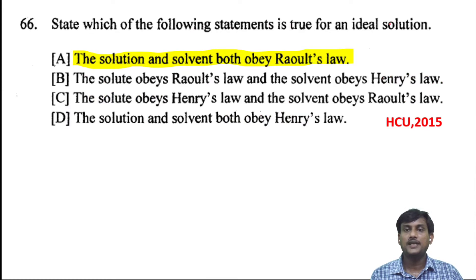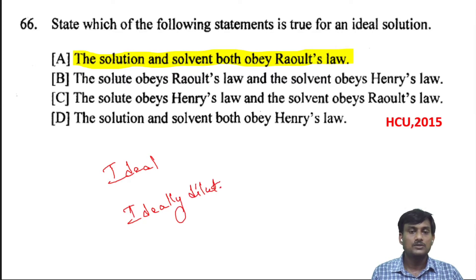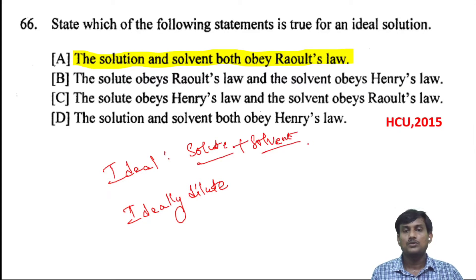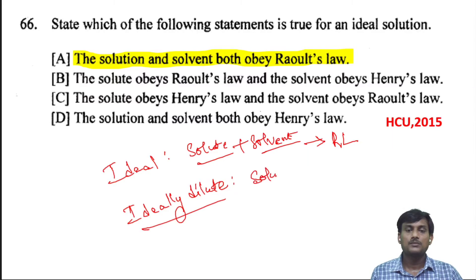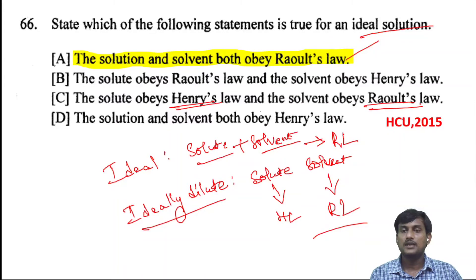Which of the following statements is true for an ideal solution? For an ideal solution, both solute and solvent obey Raoult's law. In an ideally dilute solution, the solute obeys Henry's law and the solvent obeys Raoult's law. When both solute and solvent obey Raoult's law, it is called an ideal solution. The correct option is A.